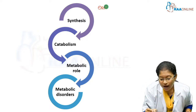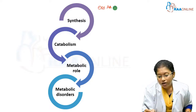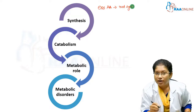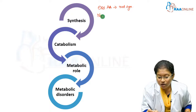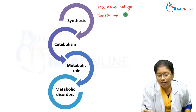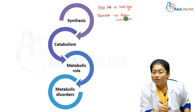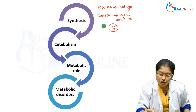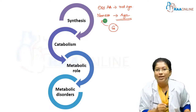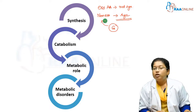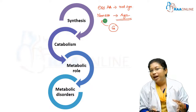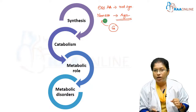An essential amino acid is one that is not synthesized in our body, whereas a non-essential amino acid is synthesized in our body. Glycine is synthesized in our body, so it is a non-essential amino acid. The first thing we will cover in this metabolism is how glycine is synthesized in our body.